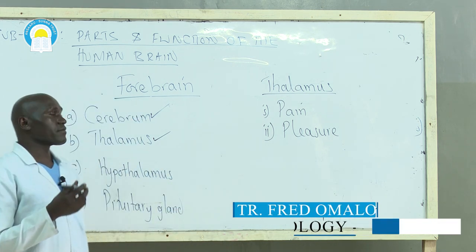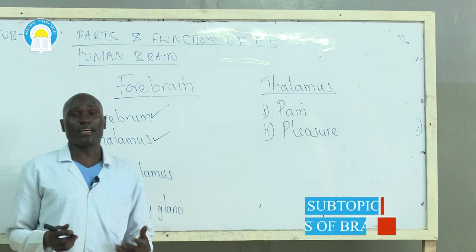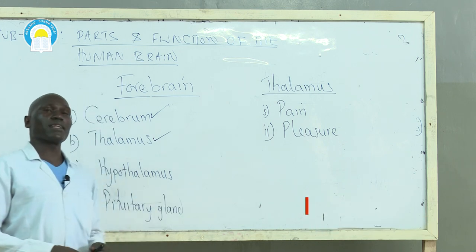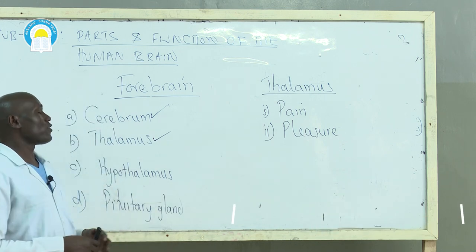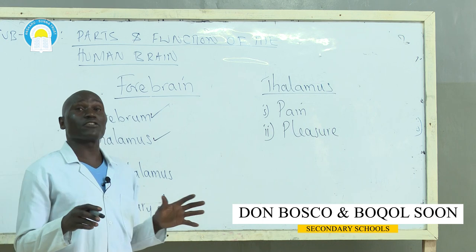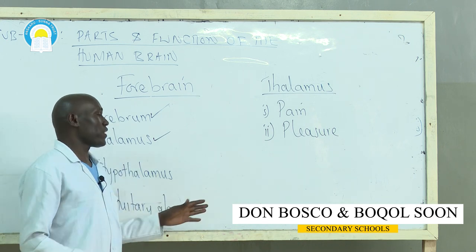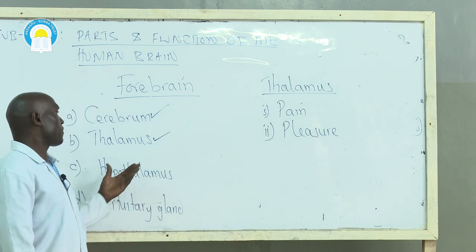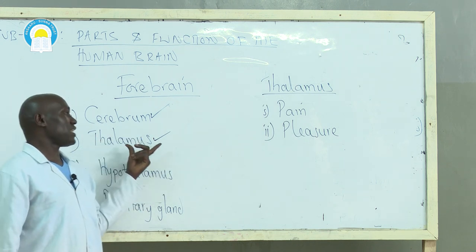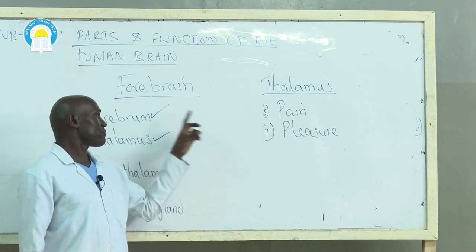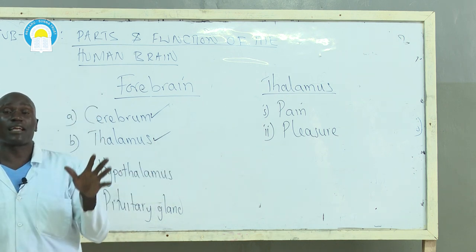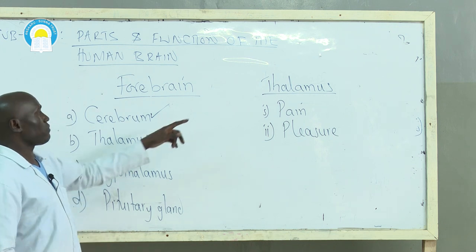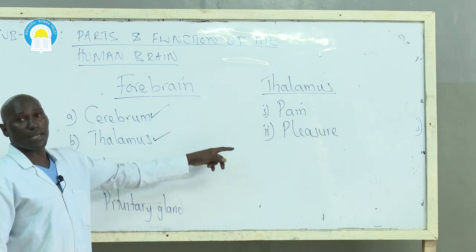When you take ice cream and feel a lot of pleasure from it, or when individuals are touched and derive pleasure, wherever you derive your pleasure from, that pleasure is integrated by the thalamus. So thalamus is the part of the forebrain responsible for integration of pain and pleasure.